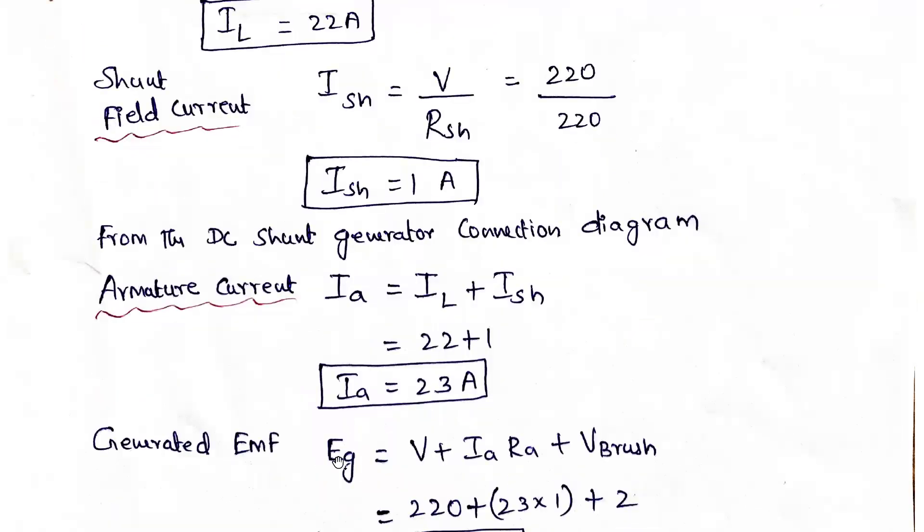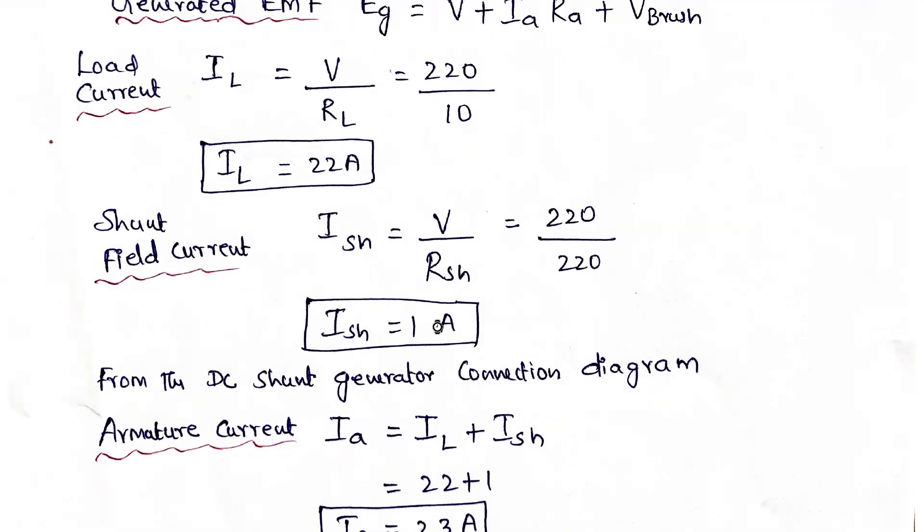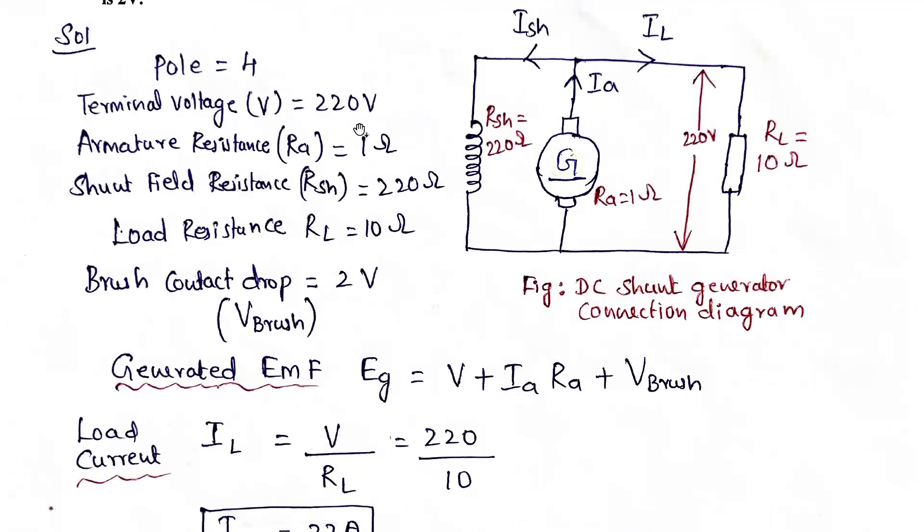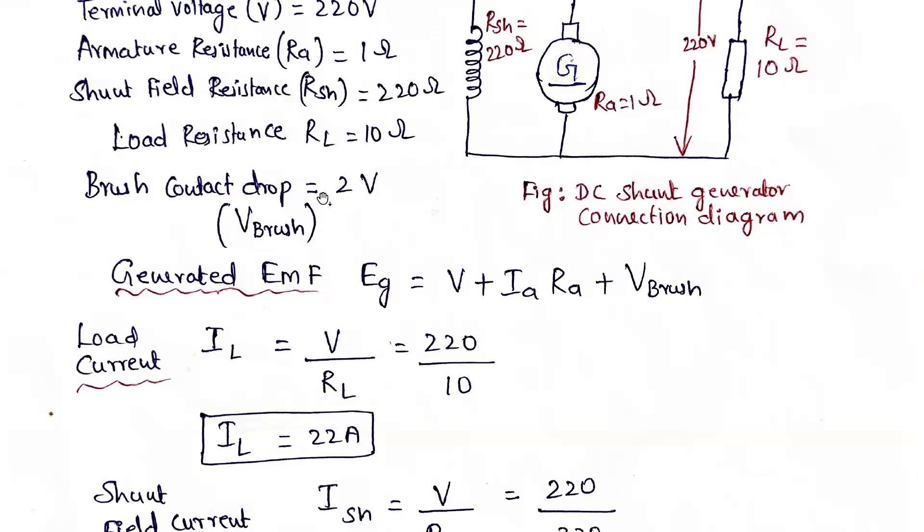So generated EMF we need to calculate. Generated EMF formula Eg = V + Ia*Ra + Vbrush. V brush is also given in the problem. V is 220 volts. Ia is 23, into Ra - given in the problem armature resistance is 1 ohm.